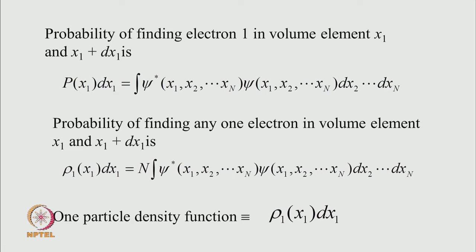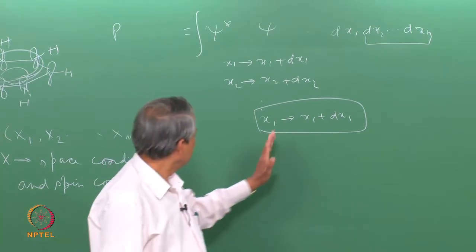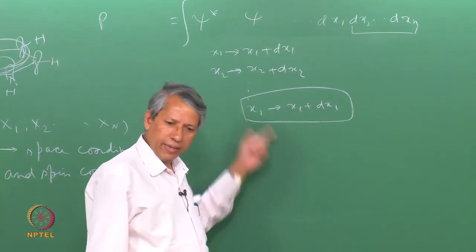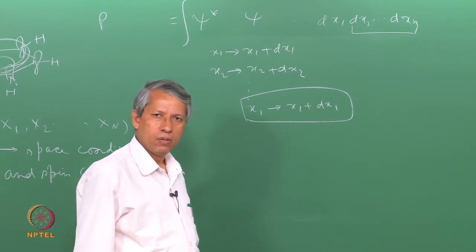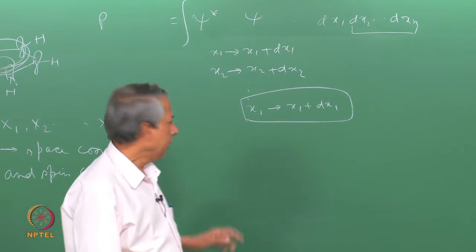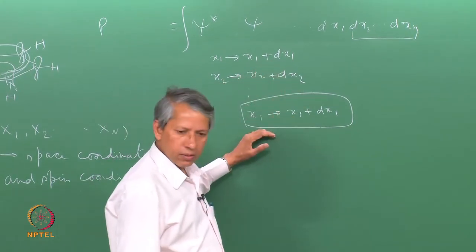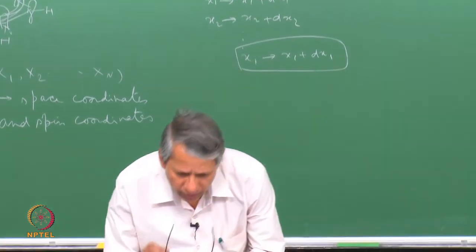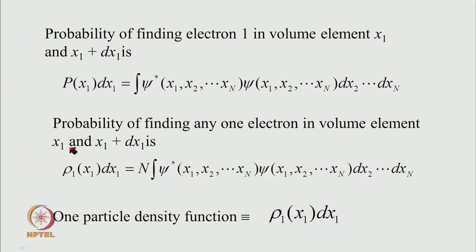If I want to find the probability of finding electron 1 in a space volume x_1 to x_1+dx_1 irrespective of where the other electrons are, I should integrate over all other coordinates leaving x_1 aside. That probability is given by an integral with respect to all coordinates other than electron 1. The probability of finding any one electron in that volume element is n times this value, which we call the one-particle density function rho_1(x_1)dx_1.